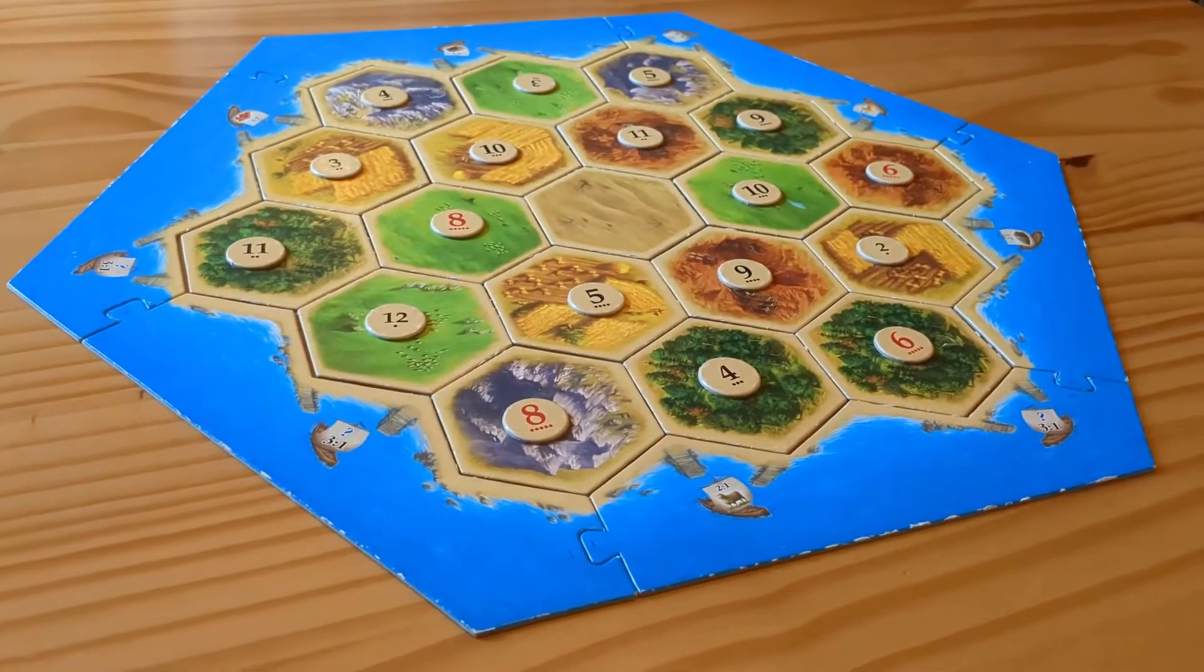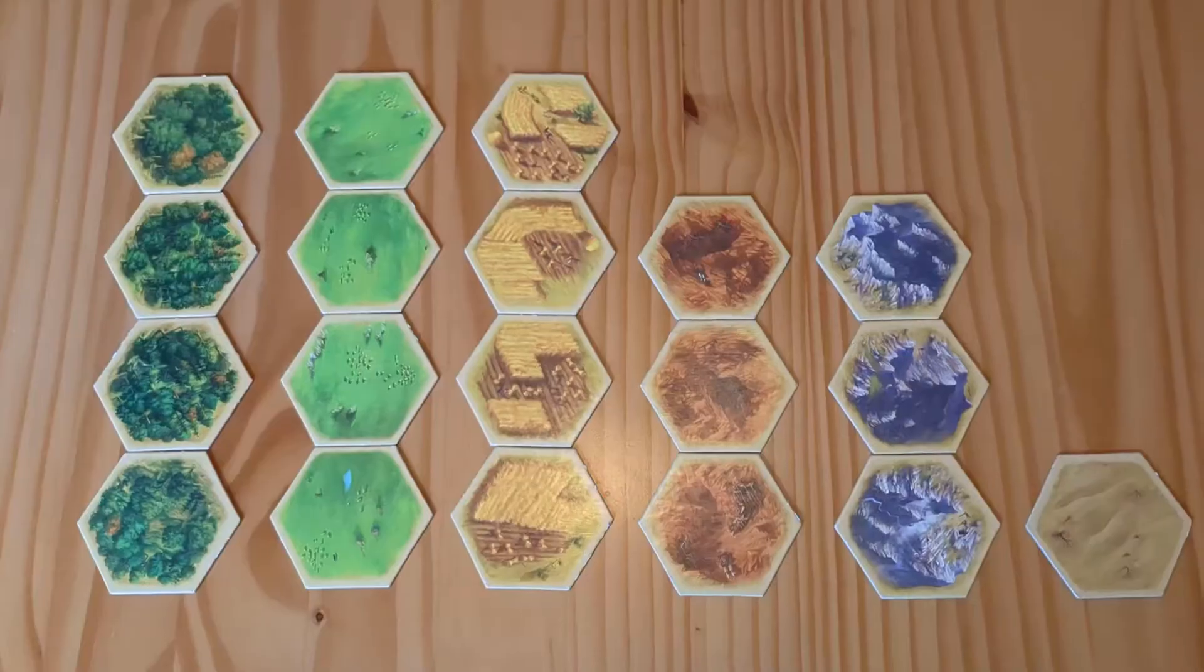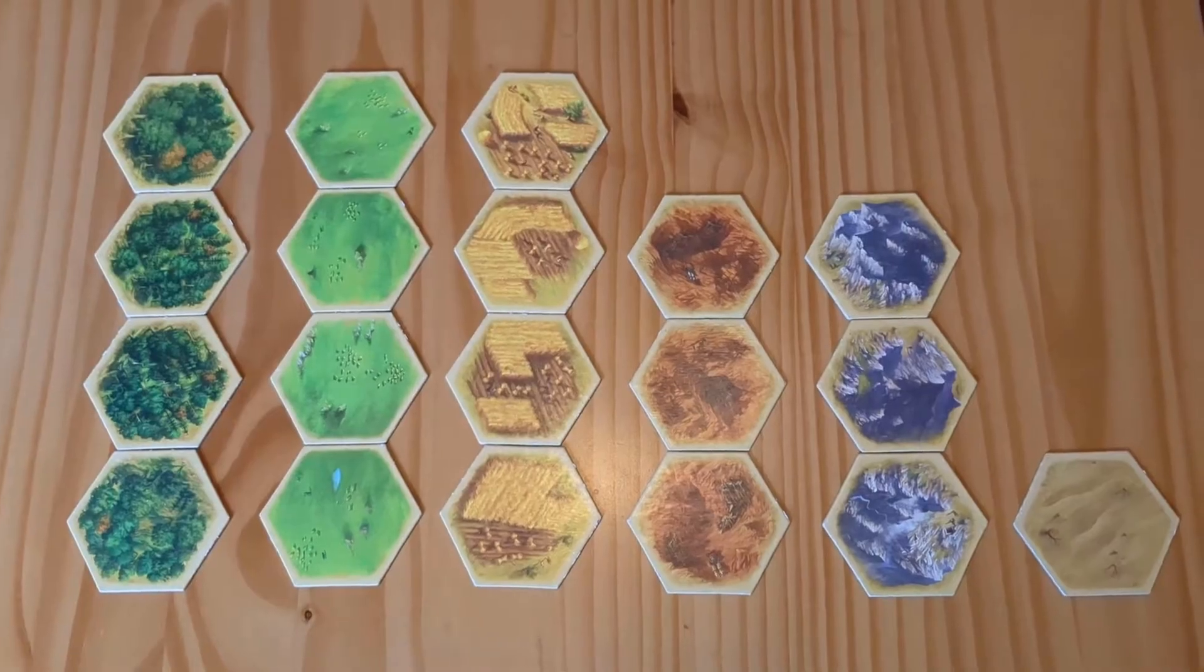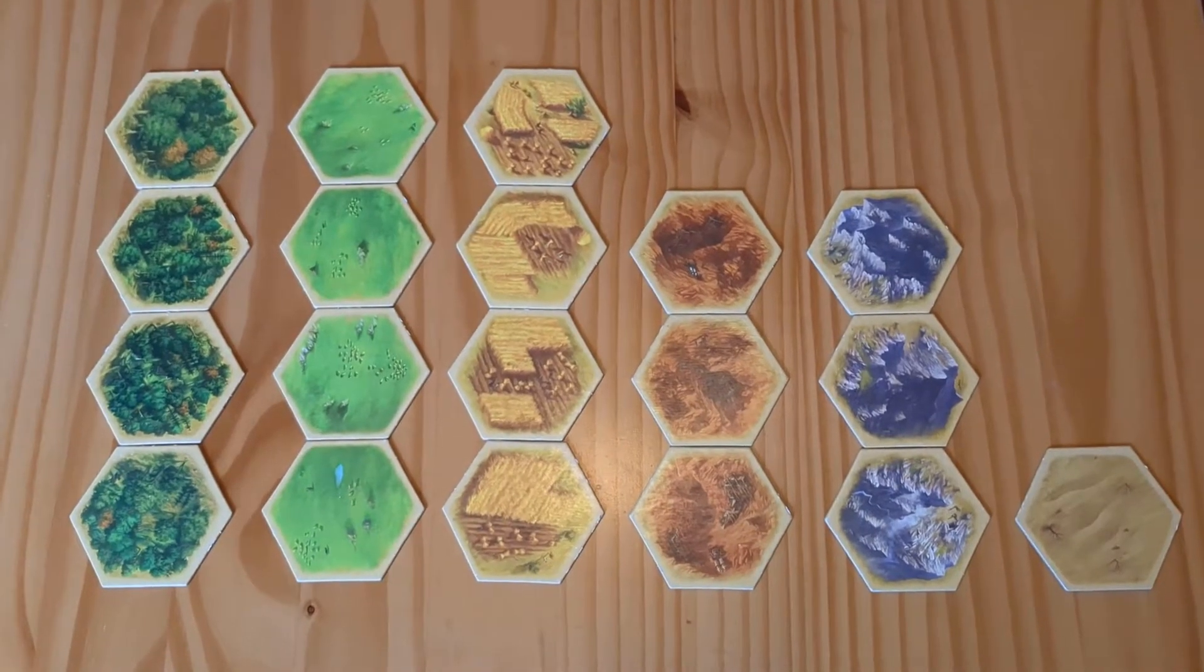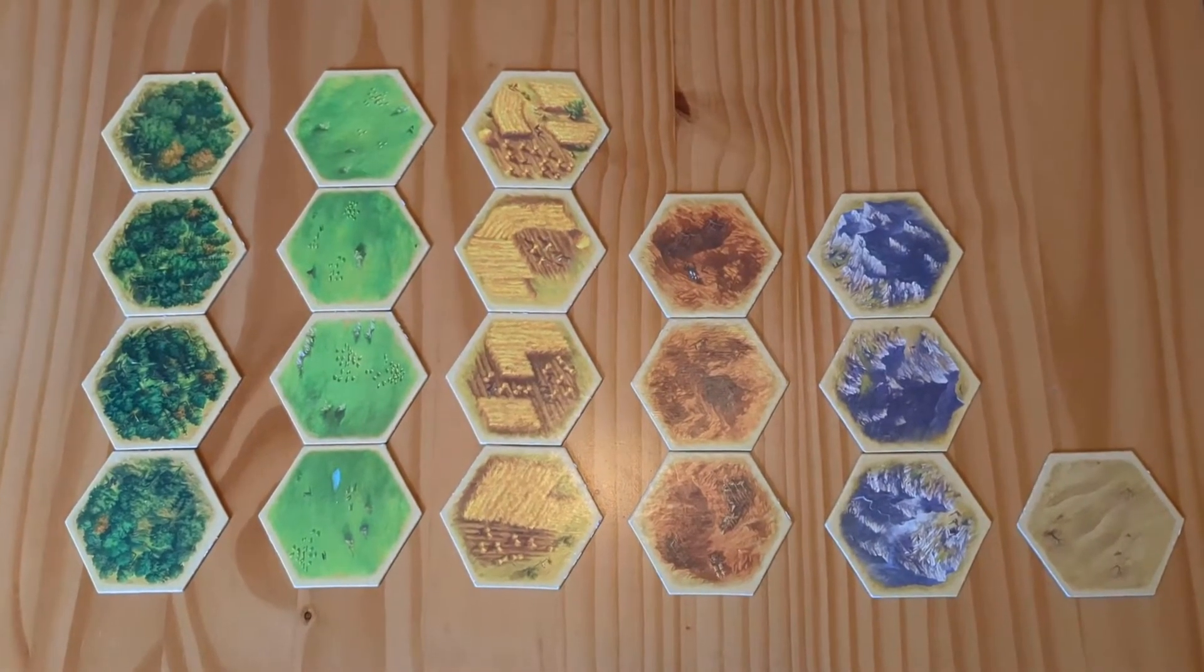What do I mean by a balanced Catan board? Catan board is made up of a number of resource tiles. There are four wood, wheat and sheep tiles, three brick and stone tiles and one desert tile.